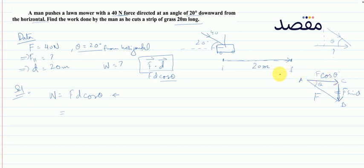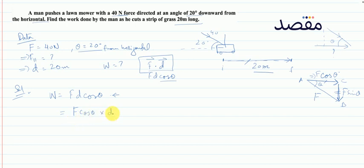हमें adjacent side चाहिए क्योंकि displacement horizontal है, lawn के along। तो हम F cosθ को displacement 20 से multiply करेंगे। यह वही W = Fd cosθ की definition बन जाती है — यह re-check करना ज़रूरी होता है।